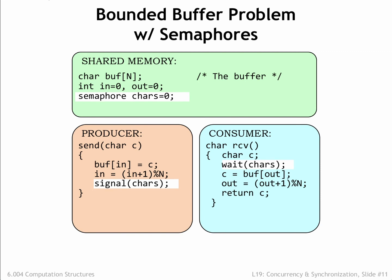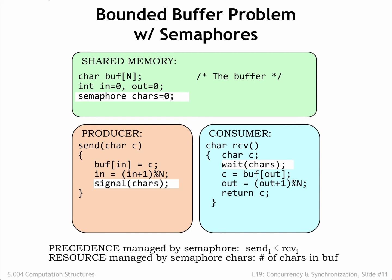We can use semaphores to manage our N-character FIFO buffer. Here we've defined a semaphore called "chars" and initialized it to 0. The value of chars will tell us how many characters are in the buffer. So send does a signal(chars) after it has added a character to the buffer, indicating the buffer now contains an additional character. And receive does a wait(chars) to ensure the buffer has at least one character before reading from the buffer. Since chars was initialized to 0, we've enforced the constraint that the i-th call to signal(chars) precedes the completion of the i-th call to wait(chars). In other words, receive can't consume a character until it has been placed in the buffer by send.